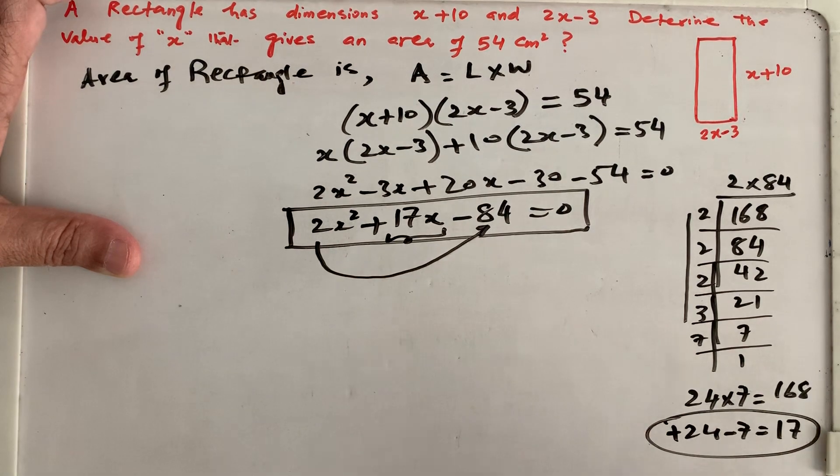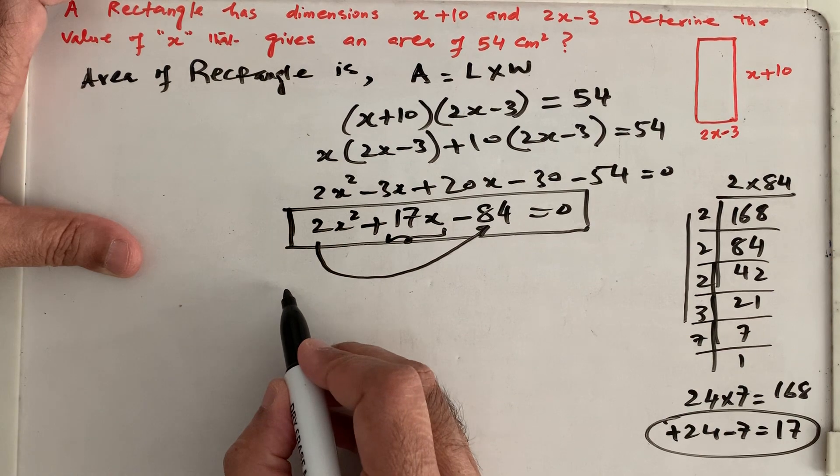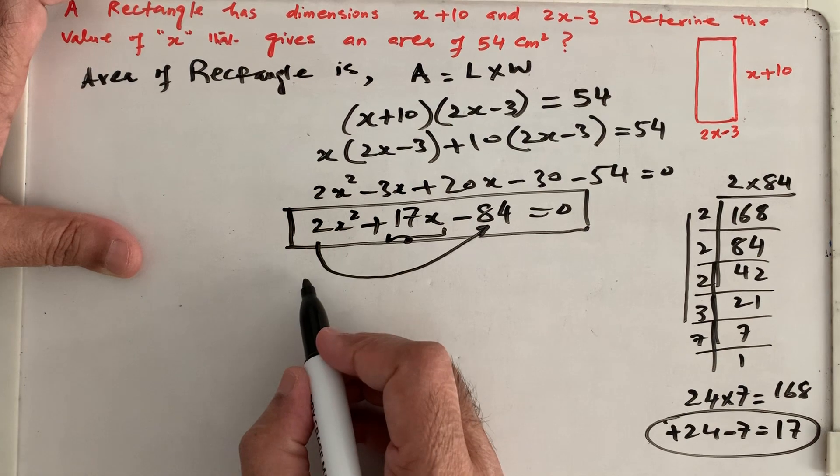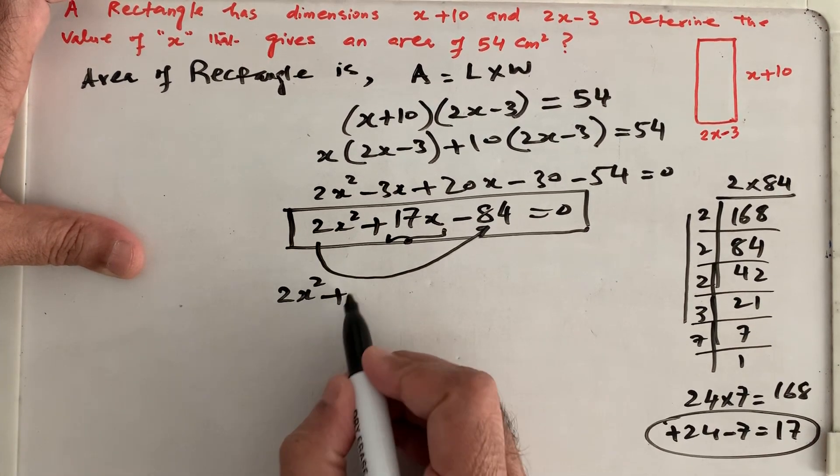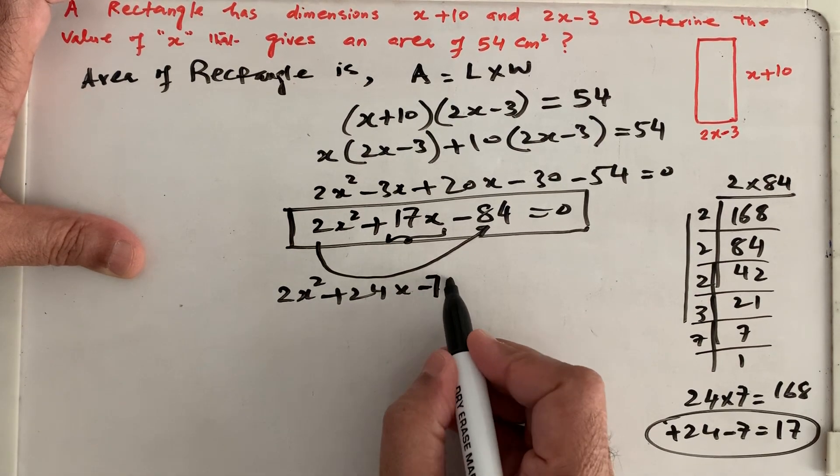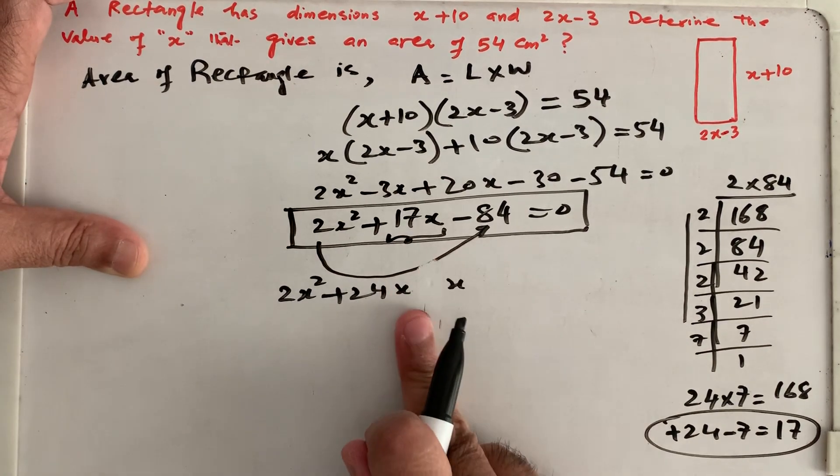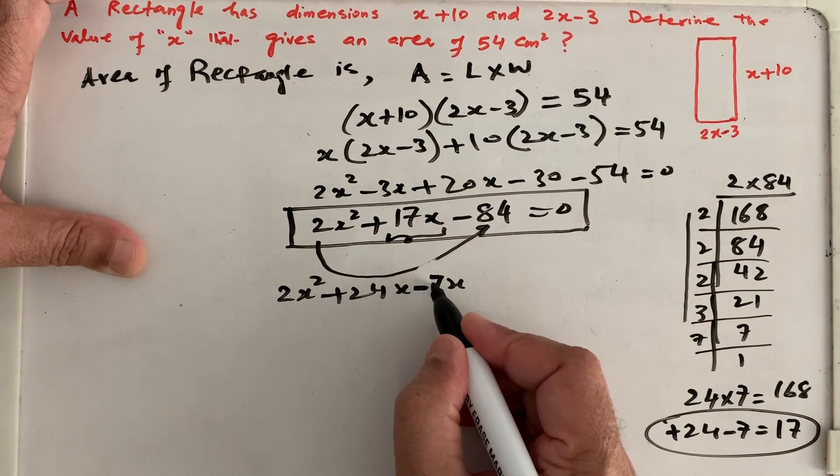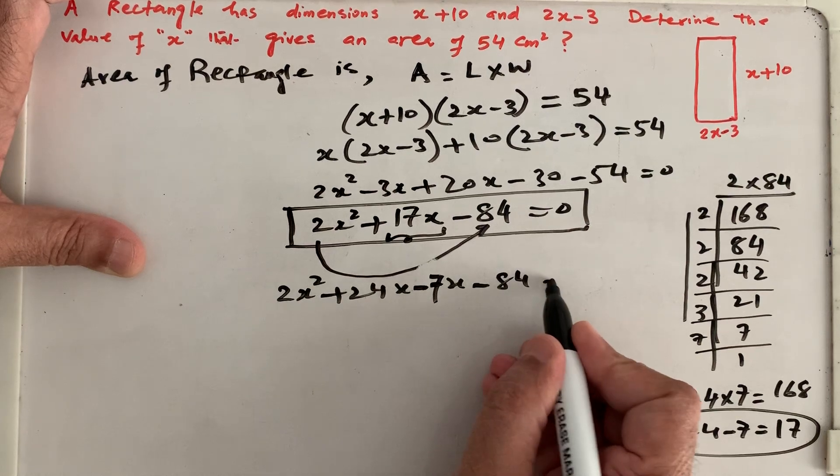Hope you understand this. We have done it several times. And a student must be practicing how to get the factor into four steps. So now we have to write it: 2x squared plus 24x minus 7x minus 84 equals to 0.